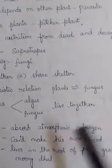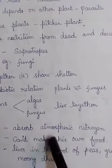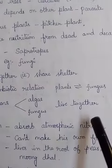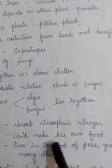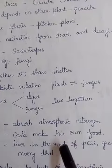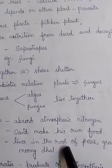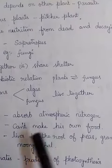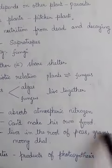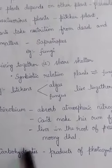Rhizobium is a kind of bacteria that absorbs atmospheric nitrogen but cannot make its own food, so it depends on plants. It lives in the roots of plants. The plants take nitrogen from the rhizobium and give nutrition to it in return. Examples of such plants are peas, grams, and moong dal.